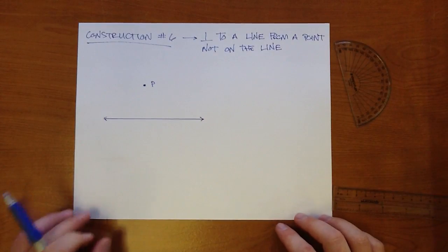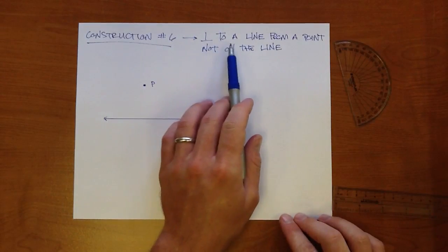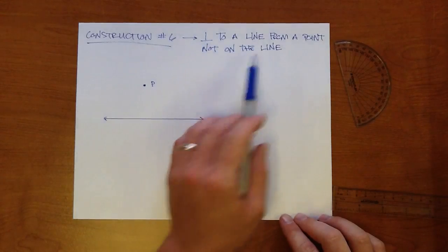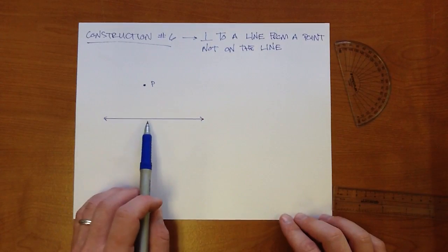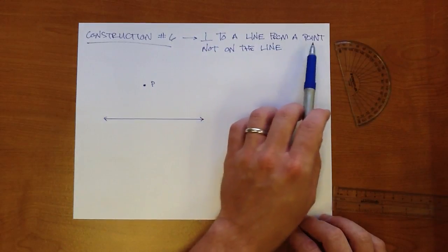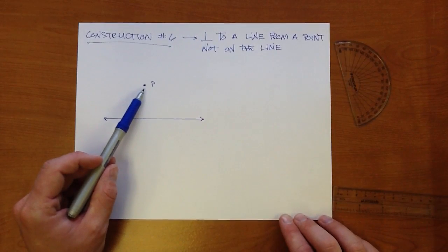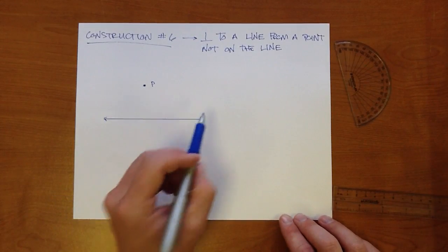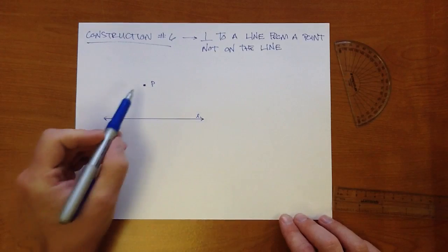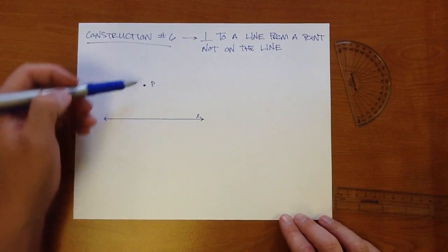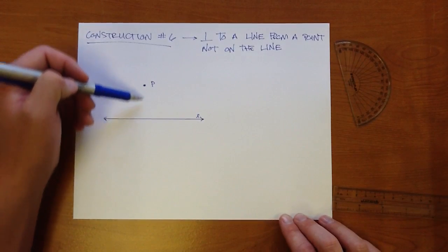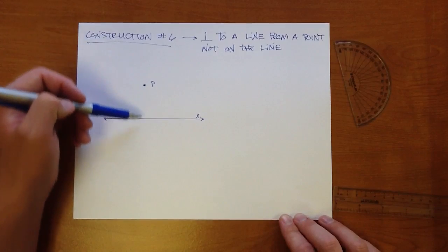And for this construction, we are trying to draw a perpendicular line, or perpendicular to a line. So we want to draw a line that's perpendicular to this one from a point not on the line. So we have point P here that is not on this line. We'll call it line L. Point P is not on line L. We want to figure out how can we draw the line that's perpendicular to line L through point P.